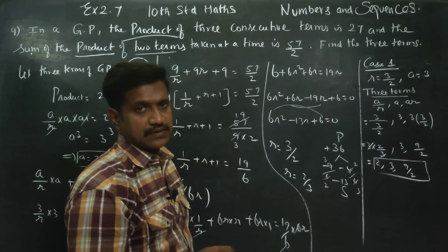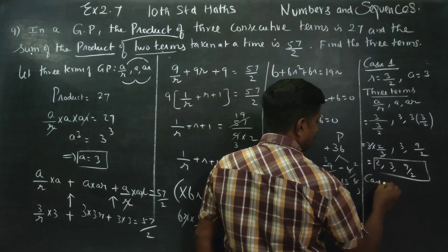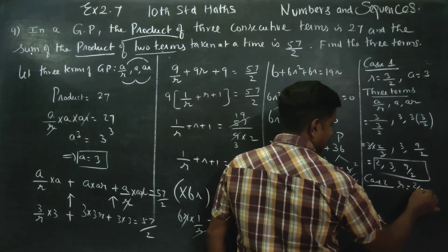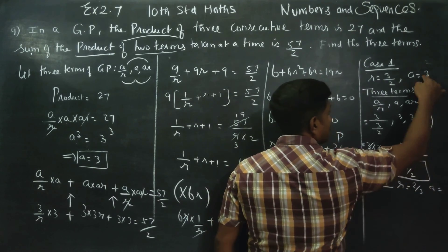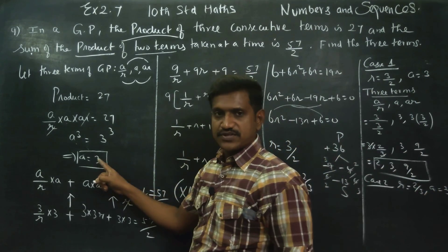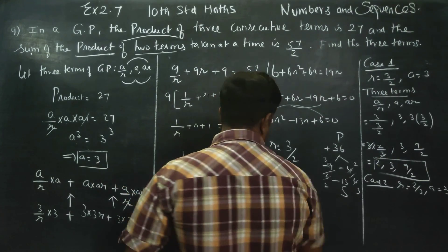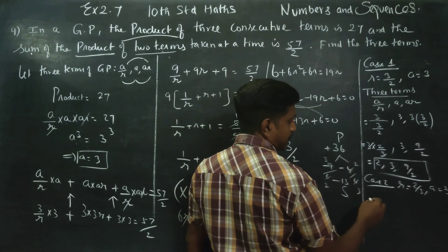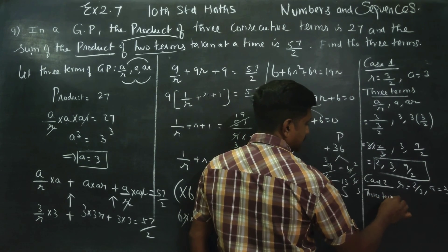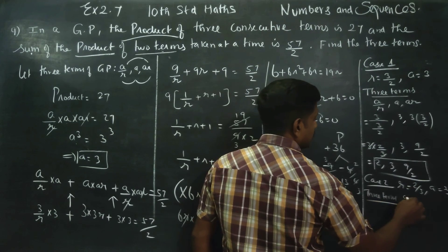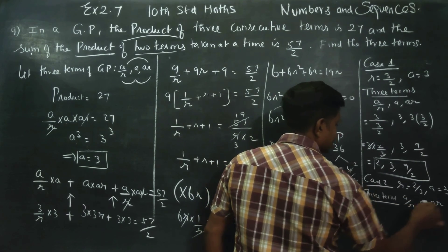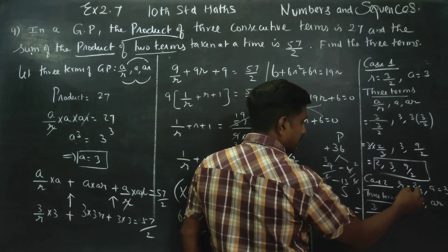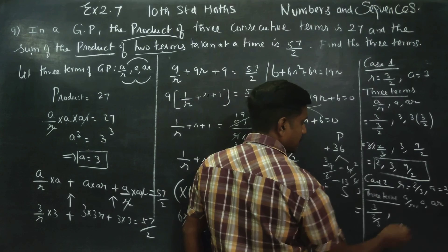Case 2: R is equal to 2 by 3, and A is equal to 3. Using A by R, A, AR: 3 divided by 2 by 3 equals 9 by 2, A equals 3, and 3 into 2 by 3 equals 2. So the three terms are 9 by 2, 3, 2.